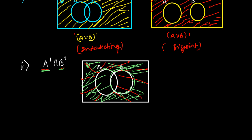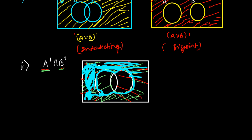This is A complement intersection B complement. I'm going to mark this with a thicker color. A complement intersection B complement is actually this outer region — not this part inside, but except this part, all of the outer region. This all region is A complement intersection B complement, which I am coloring. If you forget, this is your A and this is your B.